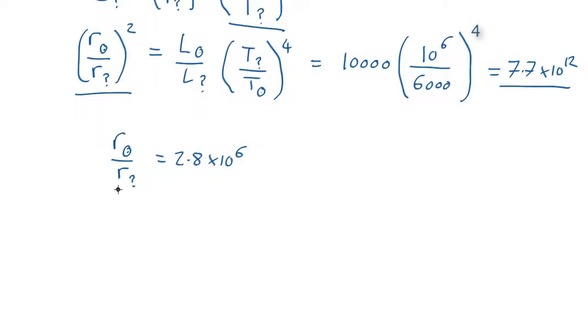So whatever this mystery object is, it's 2.8 million times smaller than the sun. The radius of the sun is about 695,000 kilometers, so we find that the radius of the mystery object equals the radius of the sun over 2.8 × 10^6.